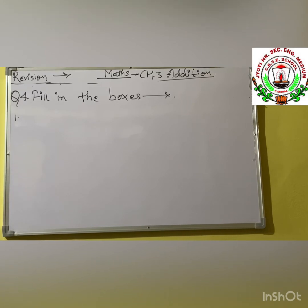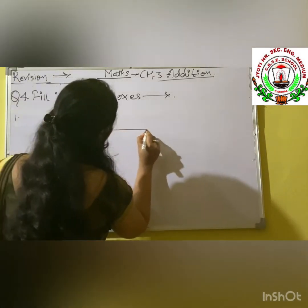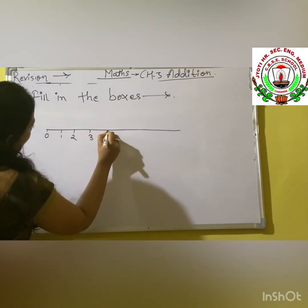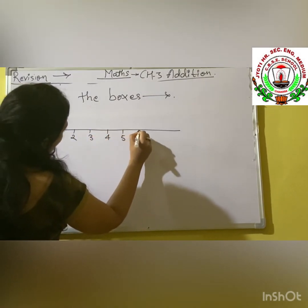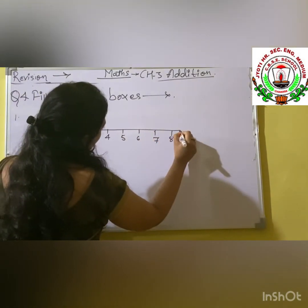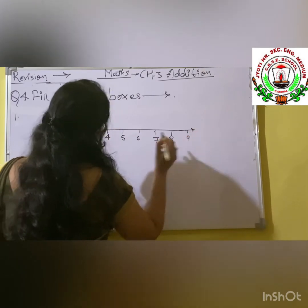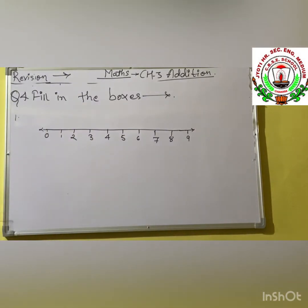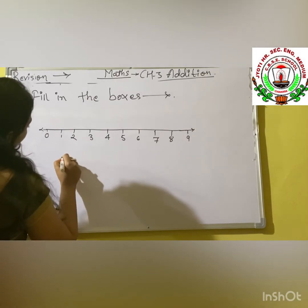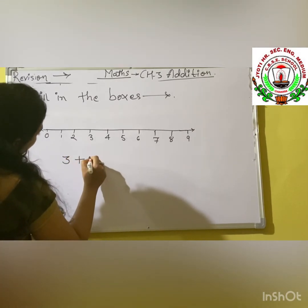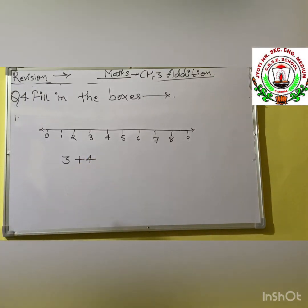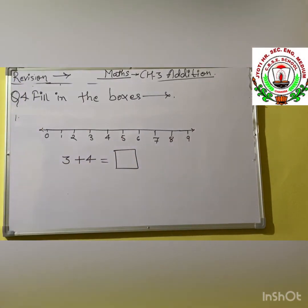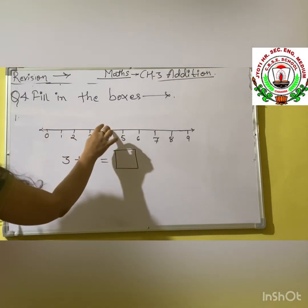First we have to draw a number scale. We put from 0, 1, 2, 3, 4, 5, 6, 7, 8 and 9. We have to write 0 to 9 on this scale. Now we will take some numbers — for example: 3 plus 4 equals to blank box. We have to draw an arrow on this scale to get our answer.